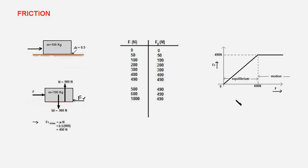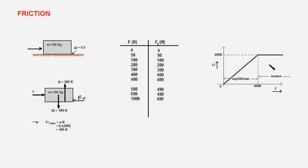Whenever you solve a problem, this diagram should pop up in your head. It reminds you that static friction is self-adjustable so as to provide equilibrium, and that it reaches its maximum value when the body is on the verge of motion. When the body is in motion, kinetic friction comes into play and its value is μk × N. Having talked about this basic concept, we will now talk about the common mistakes made by beginners.